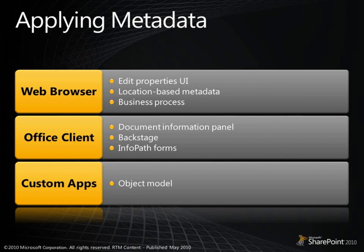Users may think they don't want to type metadata — they want to find a person, find other documents by that person, or find documents discussing the same content or metadata. However, all of these needs are better facilitated by applying metadata. To make it easier to apply metadata, there are multiple methods: editing properties in the browser, through folder-based metadata, or a business process. Users can also use the document information panel, Backstage, or InfoPath forms. Developers can use the object model to create additional options.